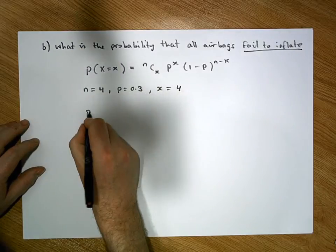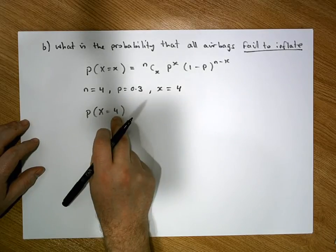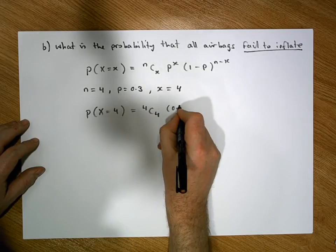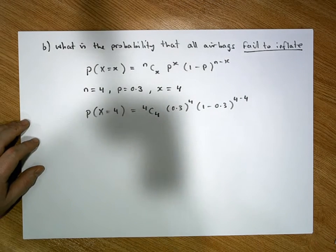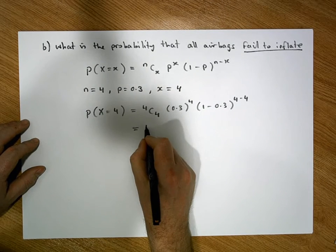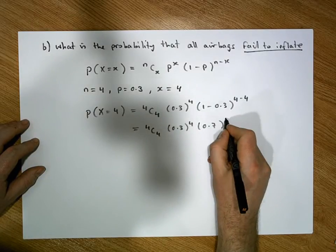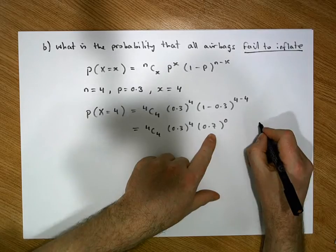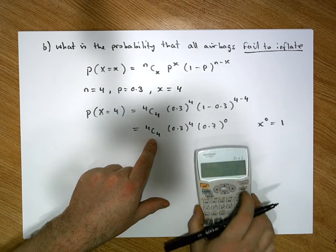This becomes: the probability that, if the car is in a crash, all four airbags fail to inflate. That's equal to nCx, which is 4C4, times 0.3 raised to the power of 4, times 1 minus 0.3 raised to the power of 4 minus 4. This becomes 4C4 times 0.3 to the power of 4 times 0.7 raised to the power of 0, since 4 minus 4 is 0 and 1 minus 0.3 is 0.7.